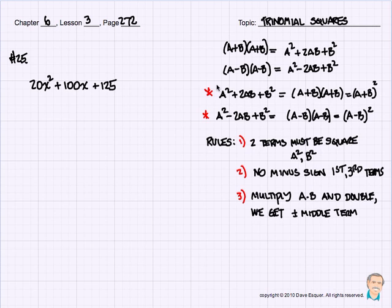For trinomial squares we have three rules. Two terms must be perfect squares — the first one and the third one, the a squared and the b squared. There can be no minus signs for those first and third terms. And when we multiply a times b and then double it, we should get the middle term with either a plus or a minus sign.